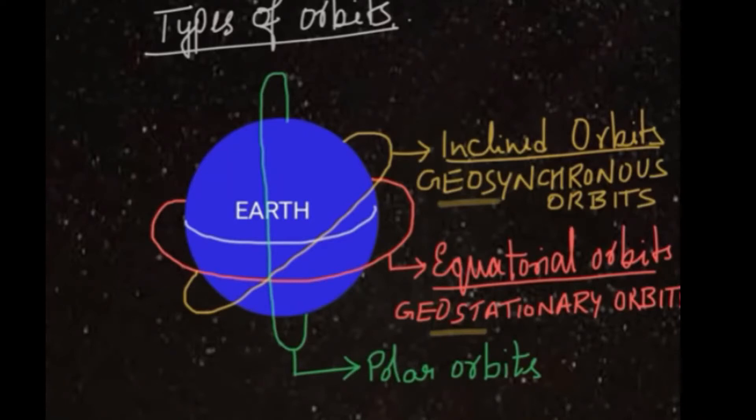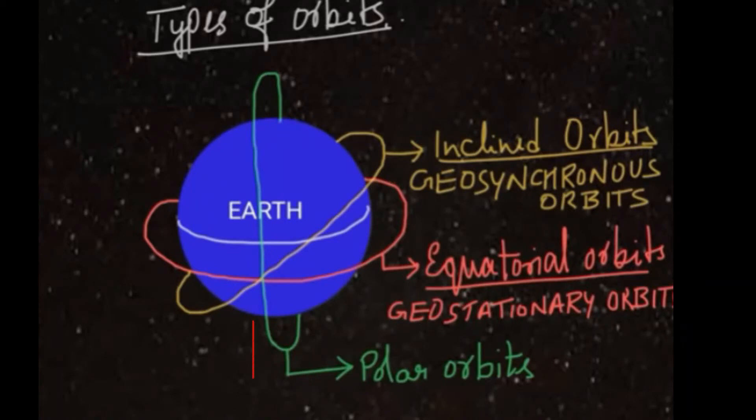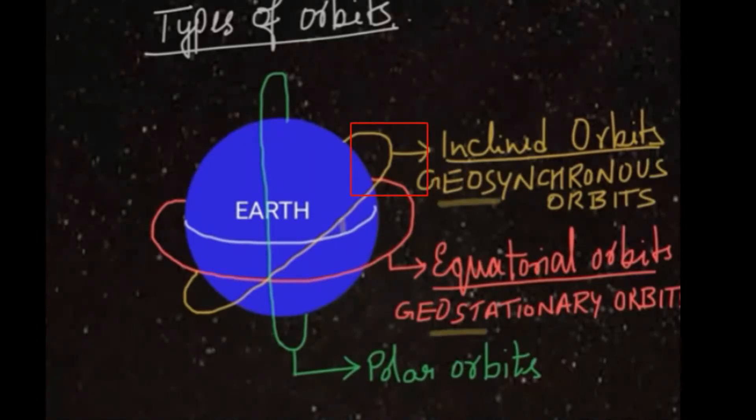the poles. These are called polar orbit satellites or sun-synchronous satellites. Polar orbit satellites move from North Pole to South Pole in ascending and descending passes. They move from east to west, whereas the Earth rotates from